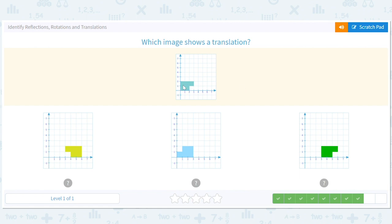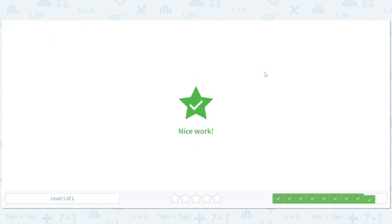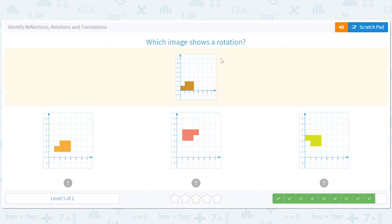Okay, over here, this green thing is just this thing slid over by two or three. So that's exactly what a translation is. And it says which image shows a translation. I have to be careful. They almost tricked me with that rotation.